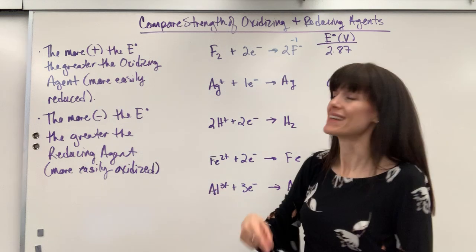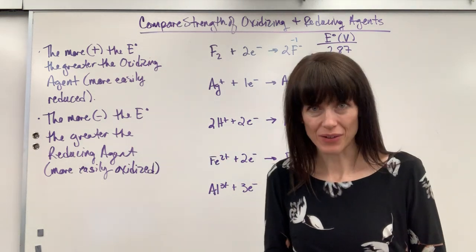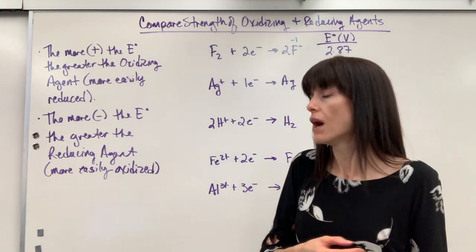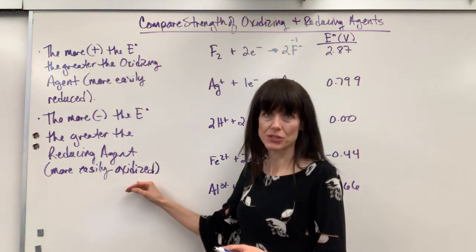Second thing that you have to know, the more negative the E value, that means that it is going to be more easily oxidized, the stronger the reducing agent.